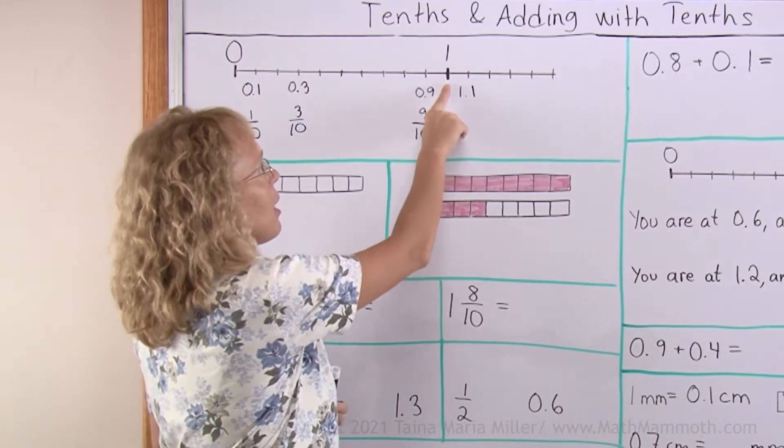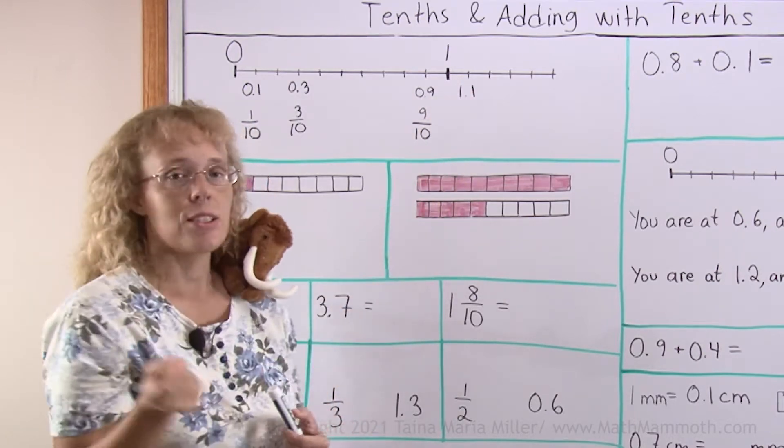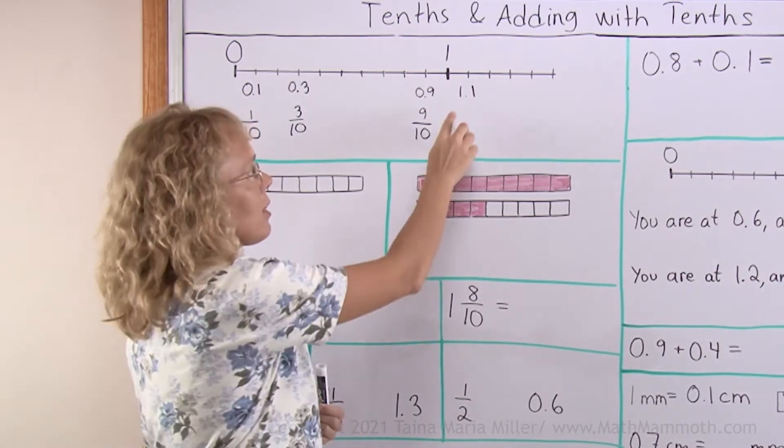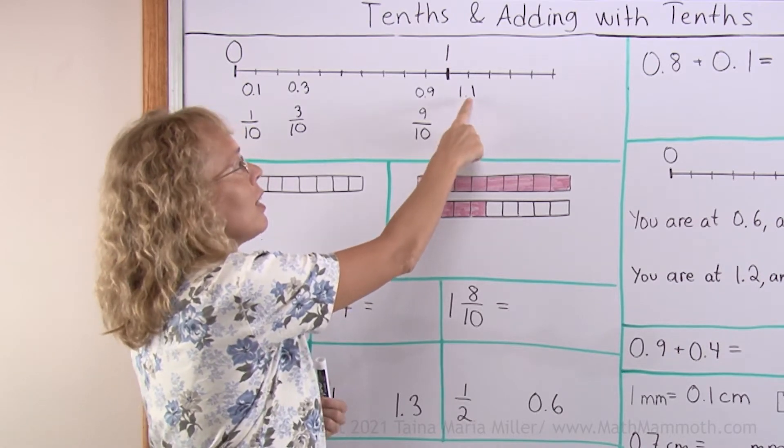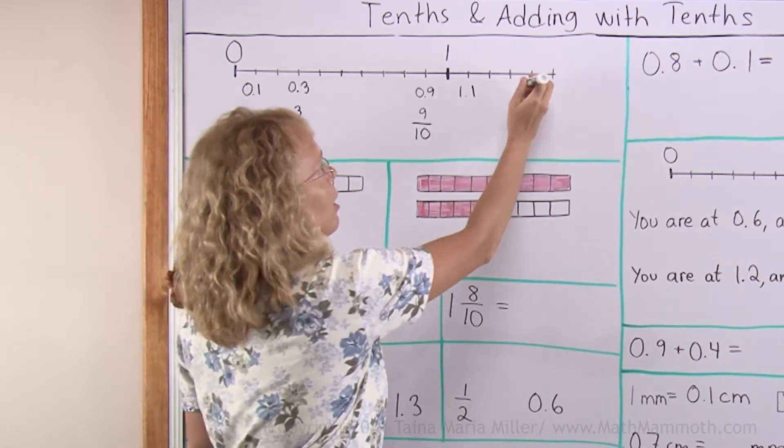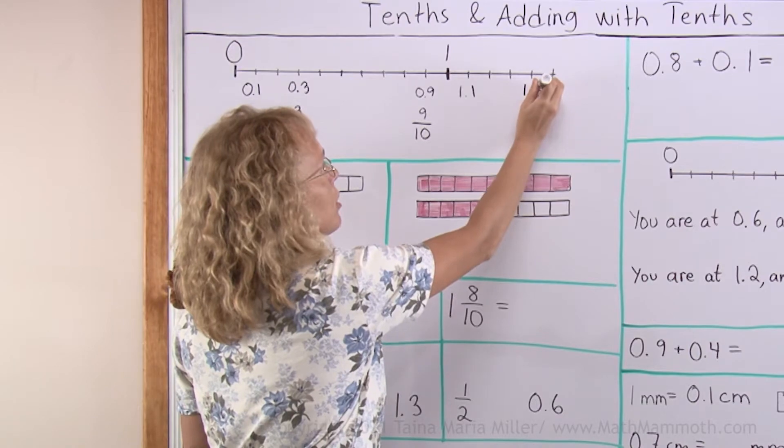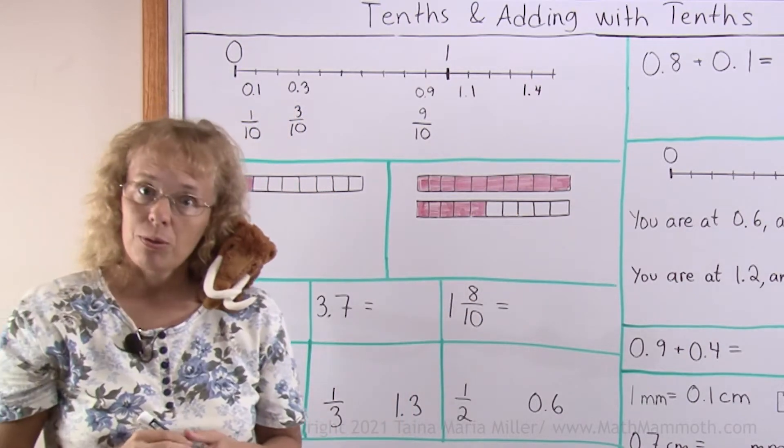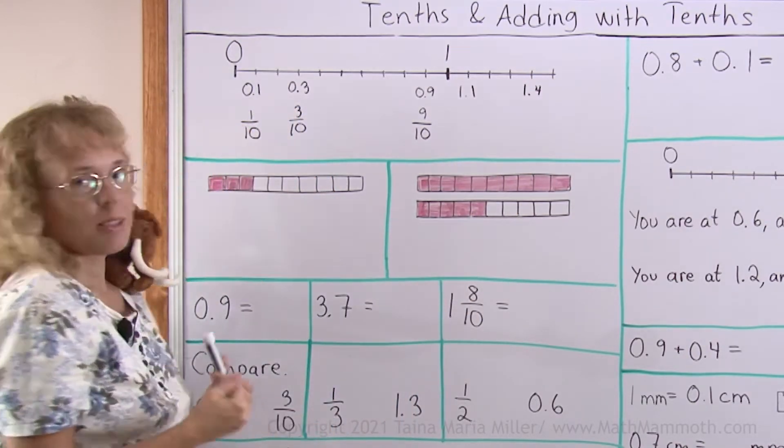And here after 1 we get to this tick mark and it is 1 and 1/10, written as 1.1. It means 1 and 1 tenth. And for example here would be 1 and 4 tenths, written as 1.4. So that is pretty simple, right?